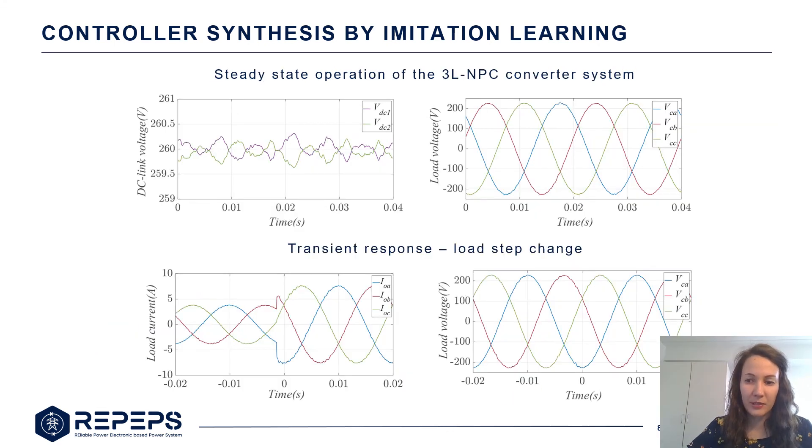On this slide we can observe the experimental validation of our ANN controller which is applied to a three-level MPC working in a standalone mode. We can see that our DC link voltage is balanced and that the load voltage has a low harmonic distortion. We can also observe that the neural network controller inherited the fast transient response of the MPC controller.